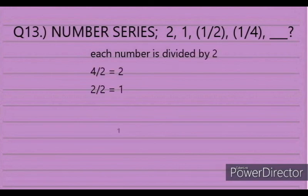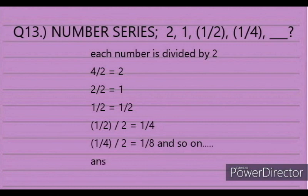Solution: Each number is divided by 2. So: 4 halves equals 2, 2 halves equals 1, 1 divided by 2 equals one-half, one-half divided by 2 equals one-fourth, one-fourth divided by 2 equals one-eighth. The answer is letter B, one-eighth.